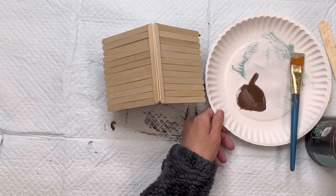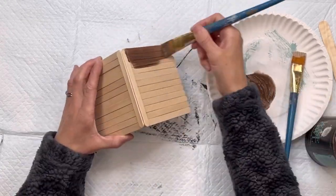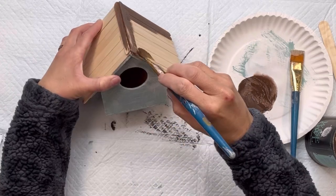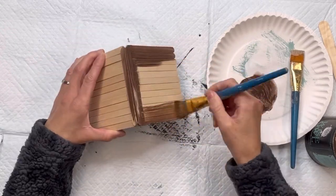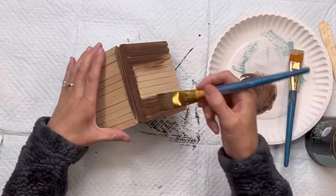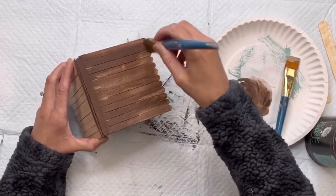Now you can leave it just the bare wood like that or I took some Wise Owl Chocolate and a little bit of water and I just watered down the chocolate paint and I applied that to the top of the roof here.